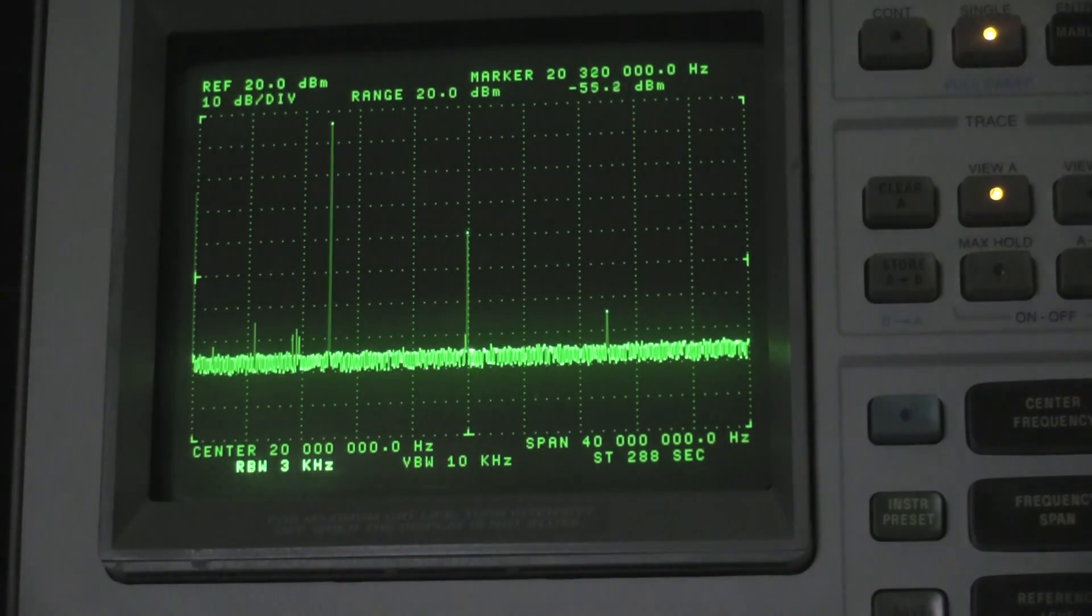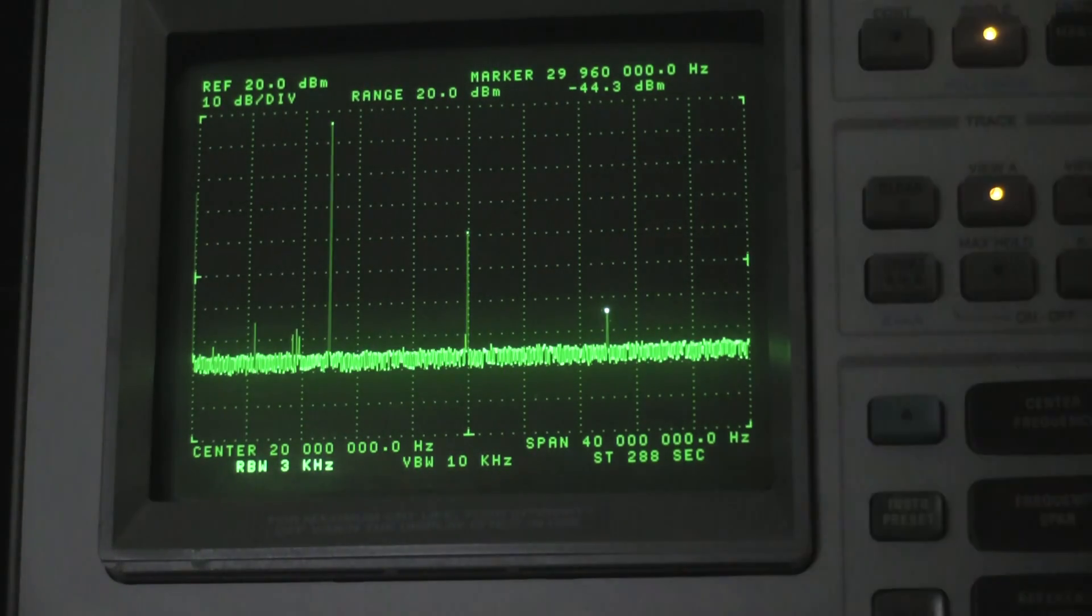It turns out, looks like this one is a little bit more harmonically rich. We have a 16.3 dBm signal at 10 MHz, negative 19.2 at 20 MHz, and negative 44.3 for the third harmonic. Not awful, but a little bit of harmonic content in the signal.